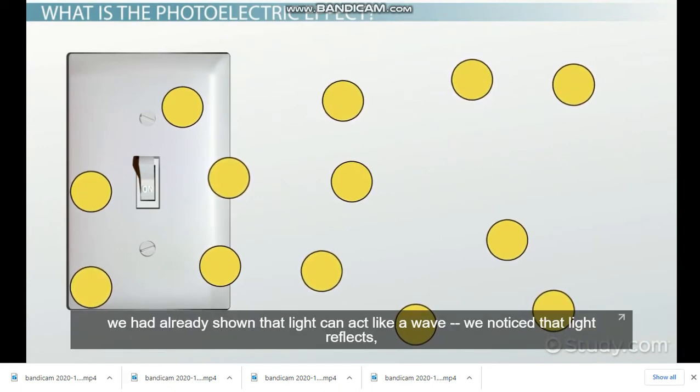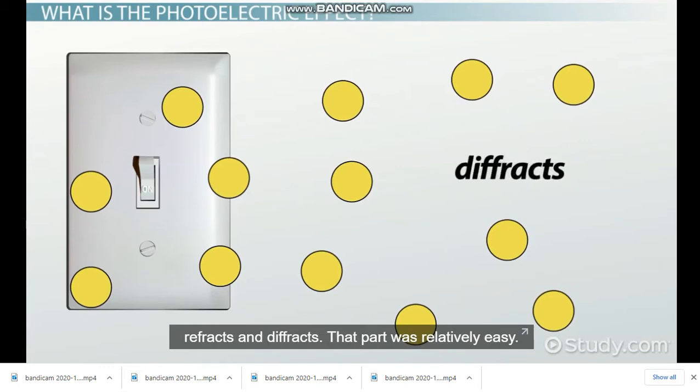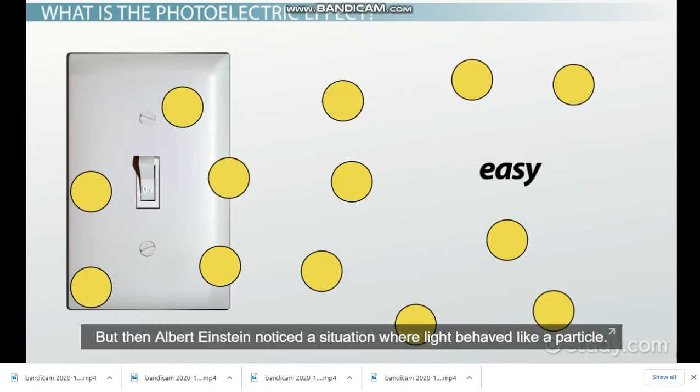In the 18th century, we had already shown that light can act like a wave. We noticed that light reflects, refracts, and diffracts. That part was relatively easy.